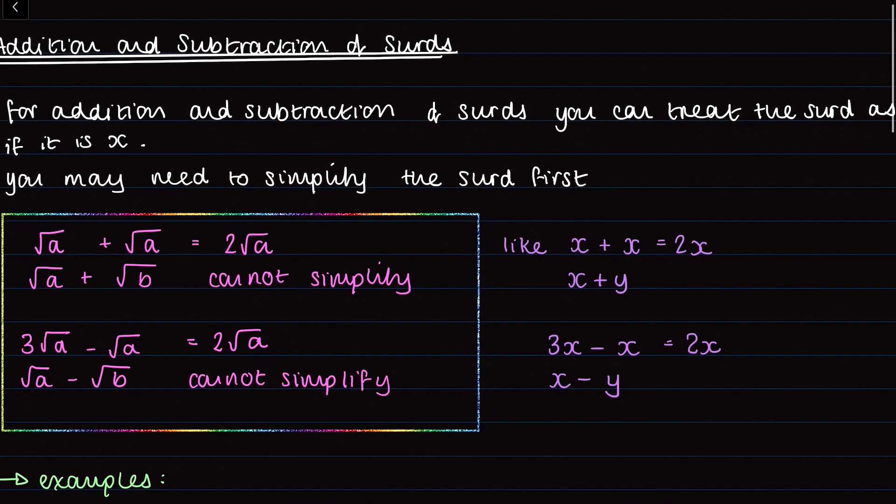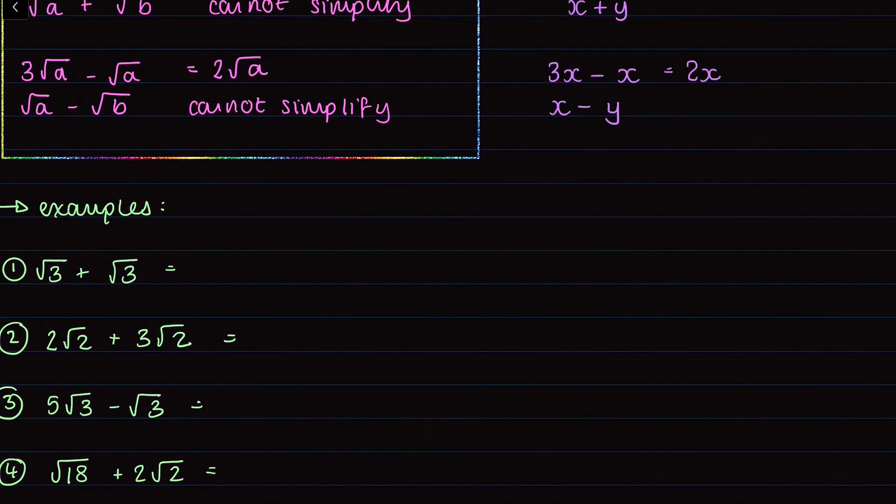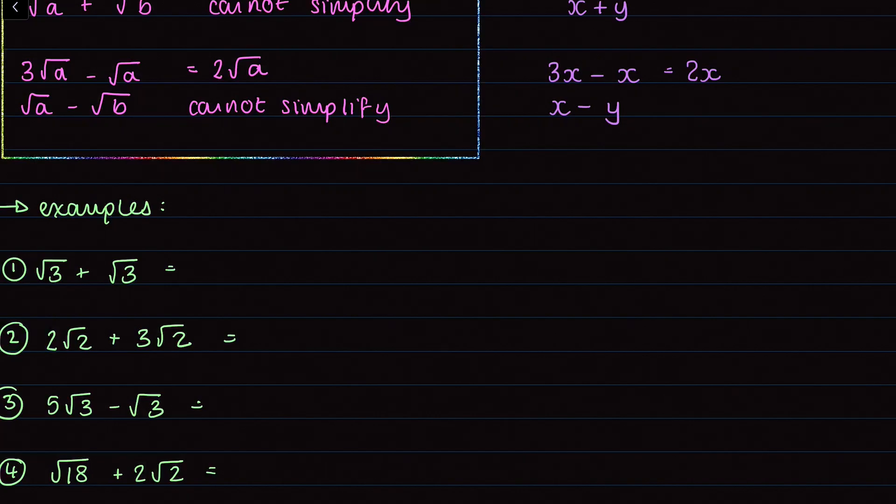But now let's have a look at some of the examples. So the first one we've got root 3 plus root 3. So if I think back to my box, that's like having x plus x, so I know that's going to be 2 times root 3.